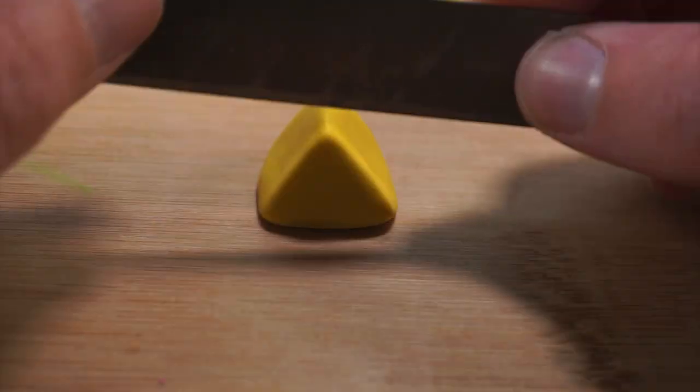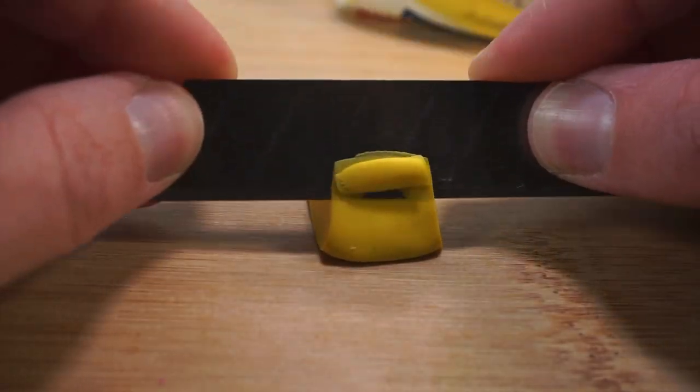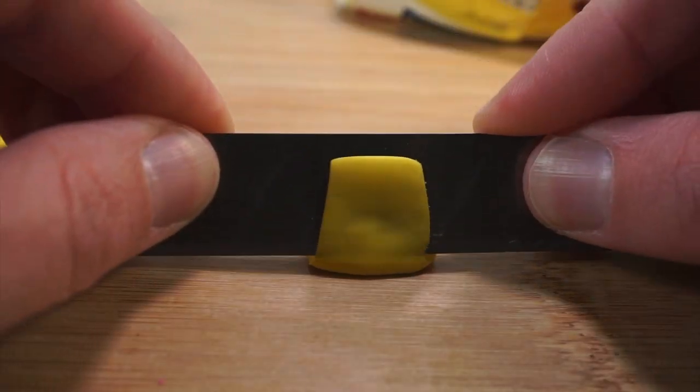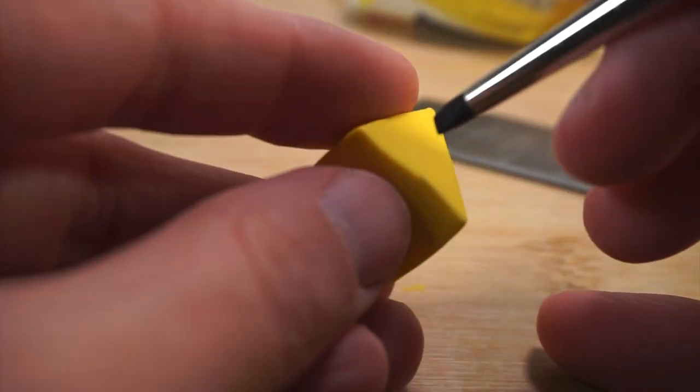I'm going to take my blade to cut around all the edges just to make sure that everything is as sharp and smooth as possible. Now that I'm happy with the shape, I'm going to take my chisel tool and start indenting some of the details.